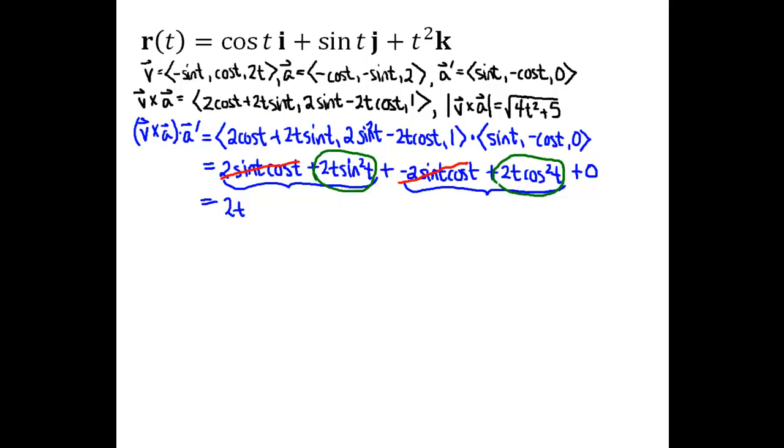One more thing we'll need before we go ahead and plug into the formulas for curvature and torsion, and that's magnitude of V. So we'll have negative sine T the quantity squared plus cosine T squared plus 2T the quantity squared all inside the radical here. So in the first two terms, we'll end up with sine squared plus cosine squared of T, and I'm just going to go ahead and write that down as one. And then the last term is 4T squared. So there's our magnitude of V.